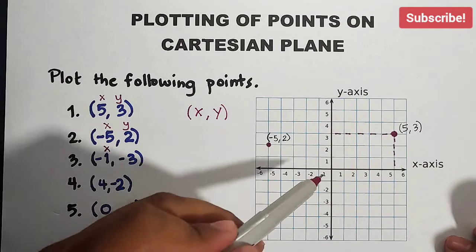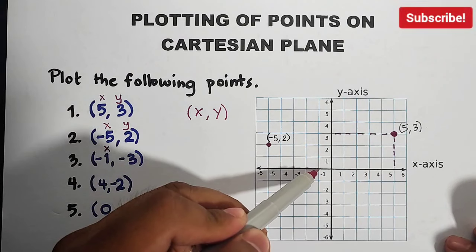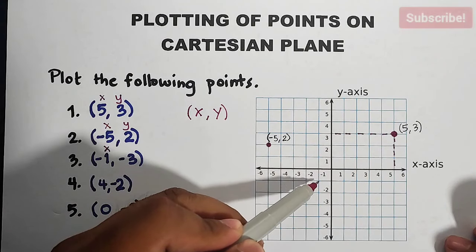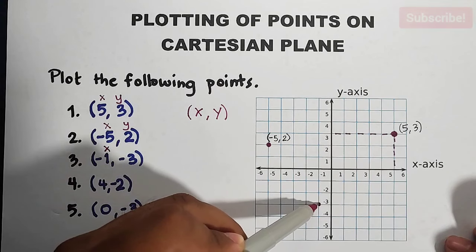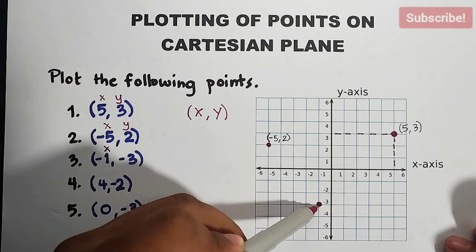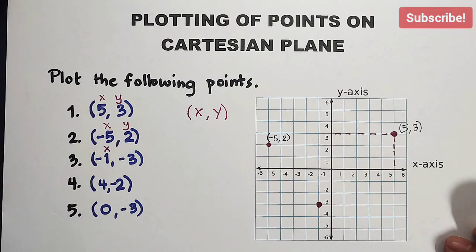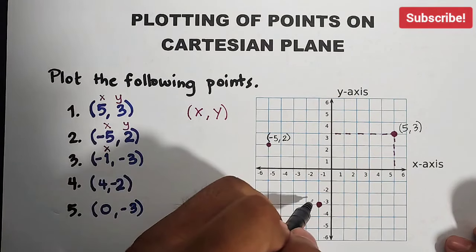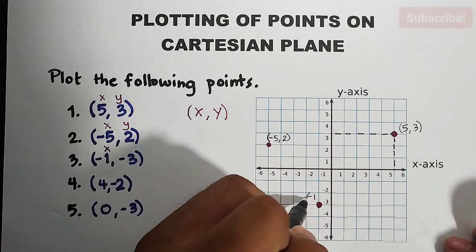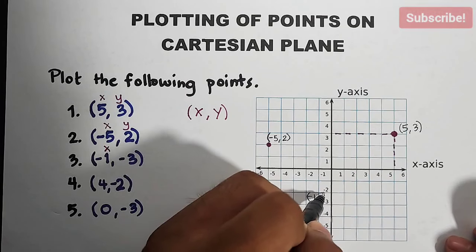Here, y is negative 3. From here, I'll go down three: 1, 2, and 3 until I reach negative 3. And here's the location of (-1, -3).